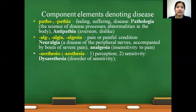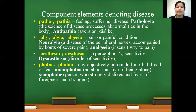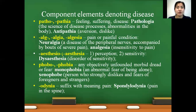Aesthesio, aesthesia — two meanings: perception and sensitivity. Example: dysaesthesia — sensitivity disordered. Phobia — any objectively unfounded morbid fear or dread. Example: monophobia — abnormal fear of being alone. Xenophobe — a person who strongly dislikes or fears foreigners or strangers. Odinia — suffix meaning pain or painful condition. Example: spondylodynia — pain in the spine.